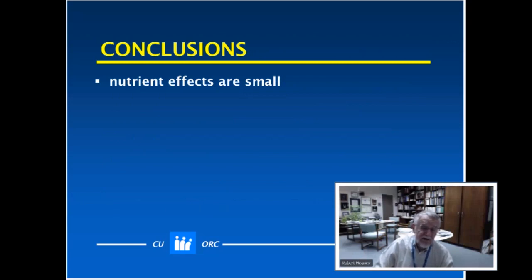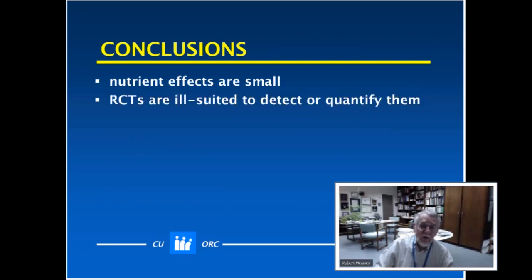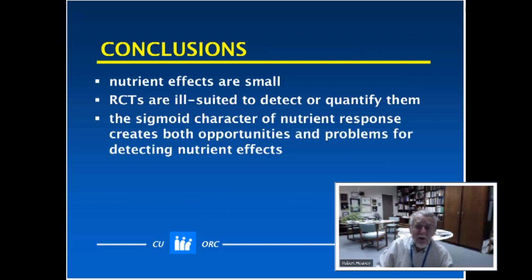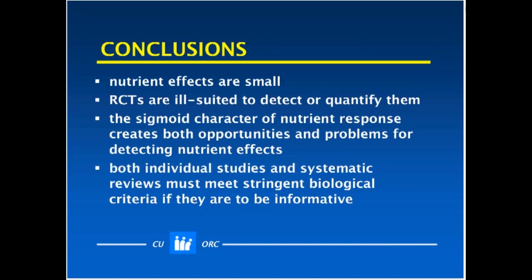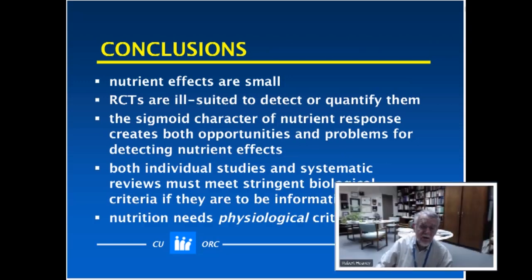To wrap up: nutrient effects are small, which means we have to have special skill in designing studies to find them. Randomized trials are ill-suited to detect or quantify what nutrients actually do. The sigmoid character of nutrient response creates both opportunities and problems for detecting nutrient effects. Both individual studies and systematic reviews must meet stringent biological criteria if they're to be informative. And nutrition needs to develop physiological criteria using means other than randomized controlled trials, which we've seen don't work very well for nutrients. With that, I thank you very much for your attention.